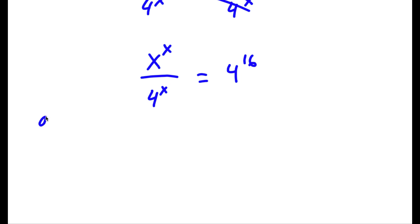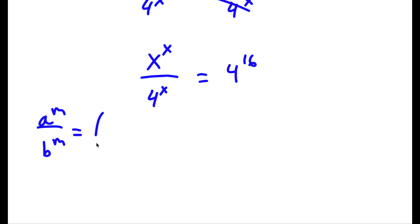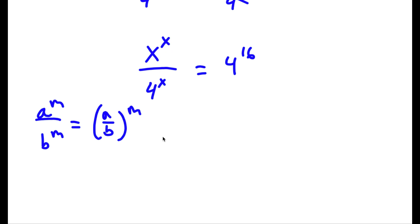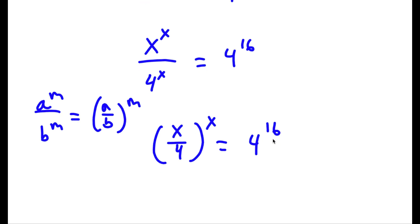Now, if I have something in the form a to the power of m over b to the power of m, this is equal to a over b to the power of m. So in this case, x to the power of x over 4 to the power of x is equal to x over 4 to the power of x. Now, this is equal to 4 to the power of 16.